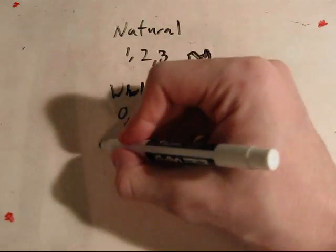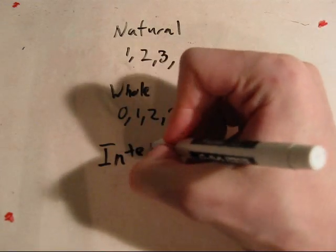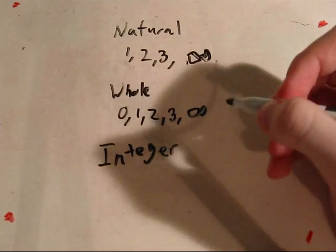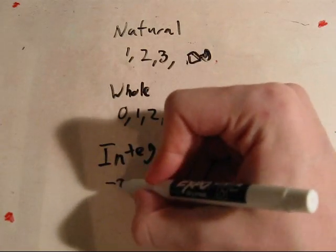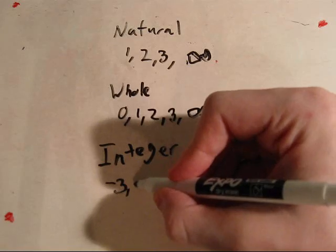Then you've got your integers, which are your whole numbers and their inverses, or negative versions.